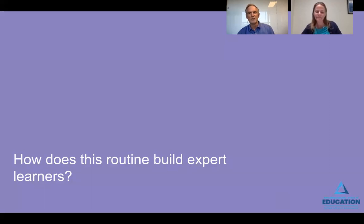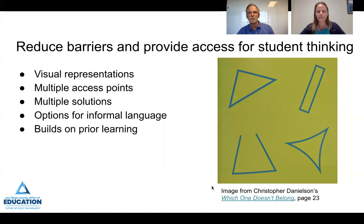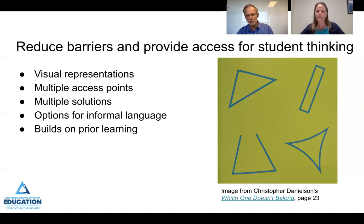How does this routine of Which One Doesn't Belong build expert learners? Take a moment to consider that question. This routine also reduces barriers and provides access for student thinking. It includes visual representations, multiple access points, and multiple solutions. It also provides options for informal language, allowing students to use rough draft thinking and rough draft language as they describe the attributes of each shape and why it doesn't belong. The routine also builds on prior learning, allowing students to use their prior experience with shapes in their explanations, and can build on the prior learning of comparing two things as we did in the Same and Different routine.